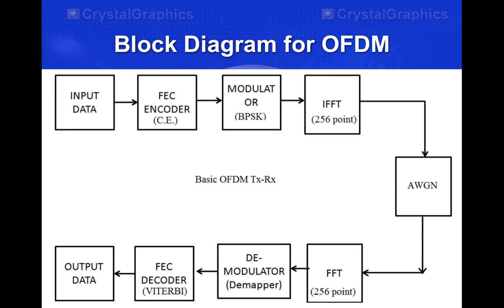This is the block diagram for OFDM — this is the block diagram for my project and my code. As you can see, the upper part is the transmitter, this is the channel, and this is the receiver part.